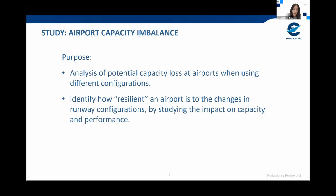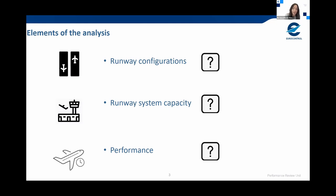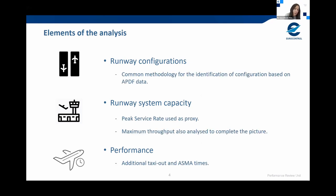When we talk about imbalance in the title 'airport capacity imbalance,' we are referring to the imbalance between operating conditions for different runway configurations, not the imbalance between capacity and demand. The technical note was published last October and we had a consultation period of about two months. When facing this study, we identified three main elements to analyze: the runway configurations and how often they are operational; the runway system capacity for each configuration; and the ability to measure performance when using one configuration versus another. We found runway configuration information was not available for all airports and was often not standardized.